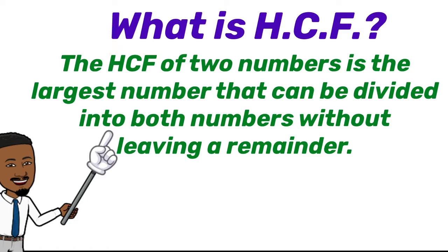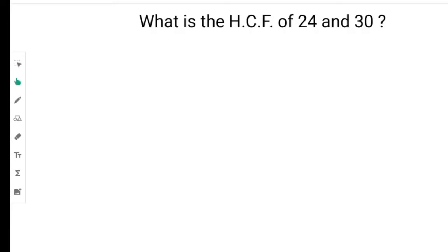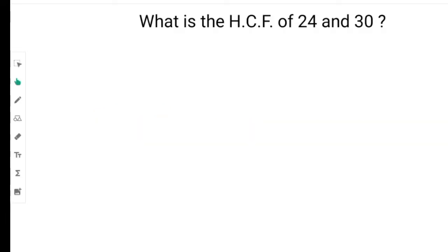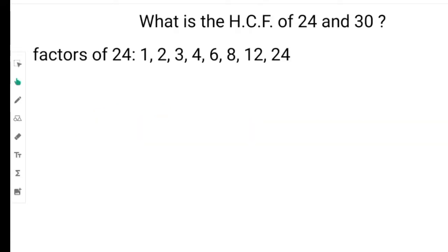Let us look at some ways of finding the HCF of two or more numbers. We're going to start by listing the factors of 24 and 30. To list the factors of 24 we would have 1, 2, 3, 4, 6, 8 and 12. All these numbers can go into 24 without leaving a remainder.